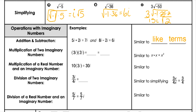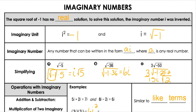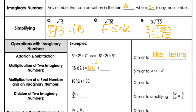If we're multiplying with imaginary numbers, it's a little bit different. When we multiply, we are multiplying the coefficients, and then i times i is i squared. But i squared is negative 1, so I can change that i squared to a negative 1. That makes the answer negative 6. So sometimes when we multiply two imaginary numbers, we actually get a real answer.